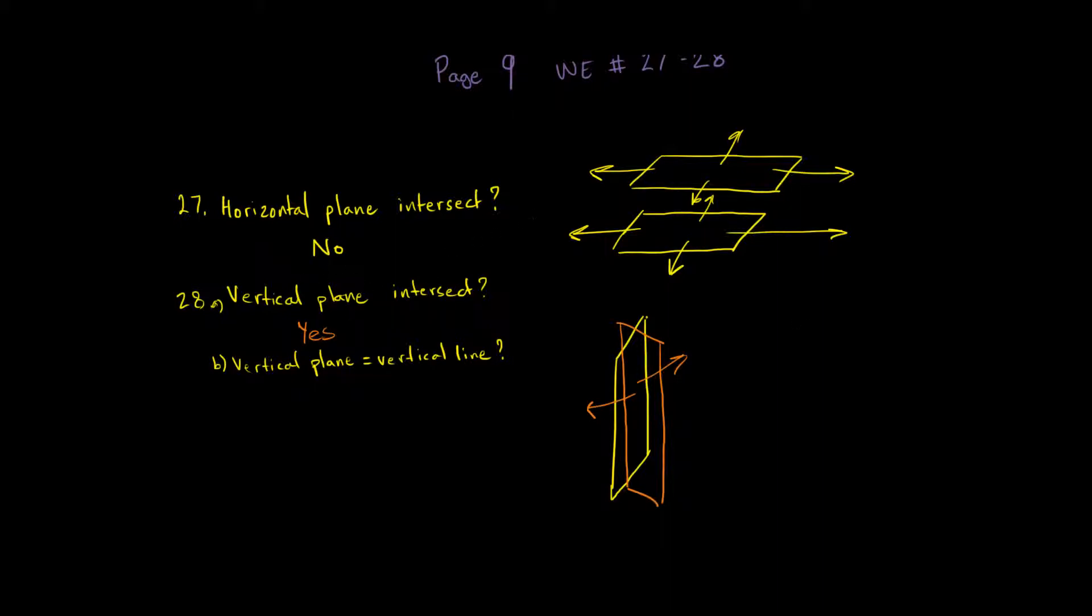Do they have to intersect? No. I can have a vertical plane that looks like this. Then I can have a vertical plane right next to it that looks like this. These vertical planes don't intersect.